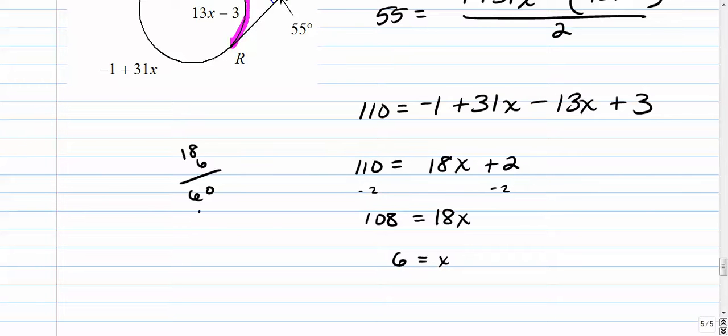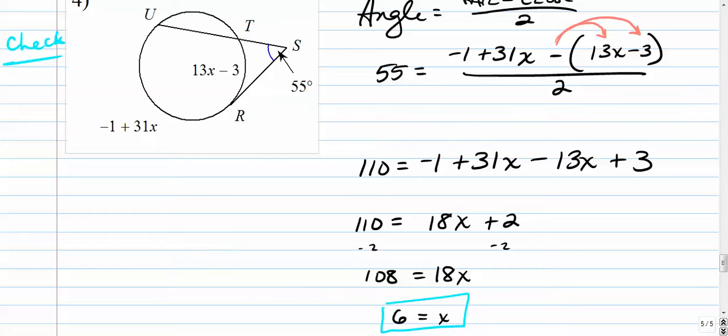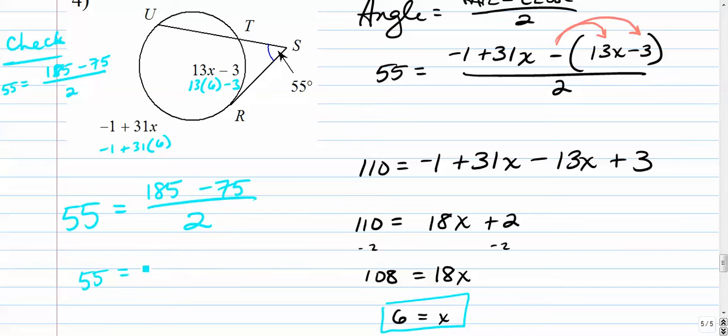18 times 6 is 60 plus 48, yep, so that works out. For this one, maybe I'll show you the check just to prove to you that this indeed does work. We're going to check to make sure that 6 is the correct answer. Let's plug it back in: where we see an x, I'm going to put a 6. So 13 times 6 minus 3, that's 78 minus 3, is 75. Remember, the angle should equal far away arc minus the close arc. The close arc we just said was 75. The far away arc is 186 minus 1, 185. Let's bring it down here. Trying to see if this works: 55. What's 185 minus 75? That's 110. 110 over 2 is 55, so that works out.